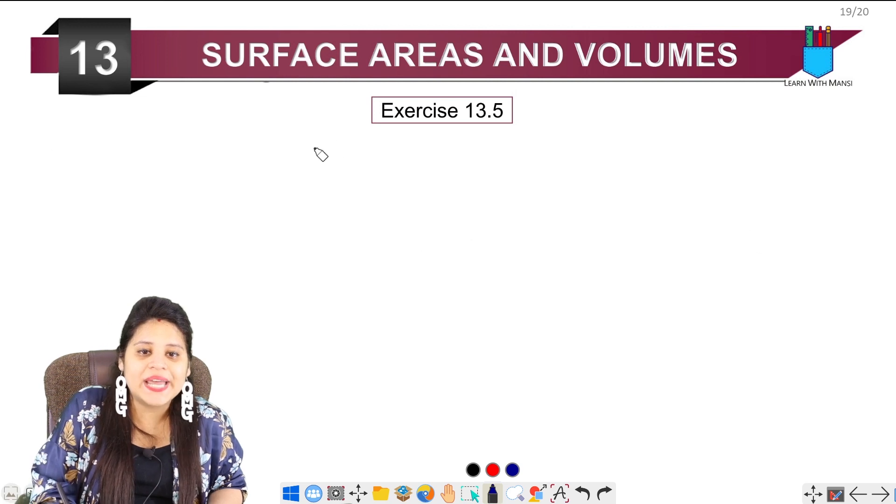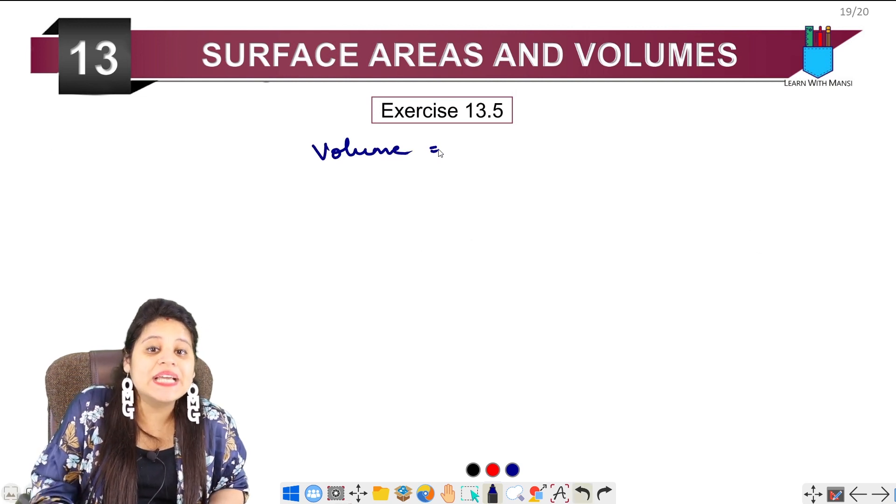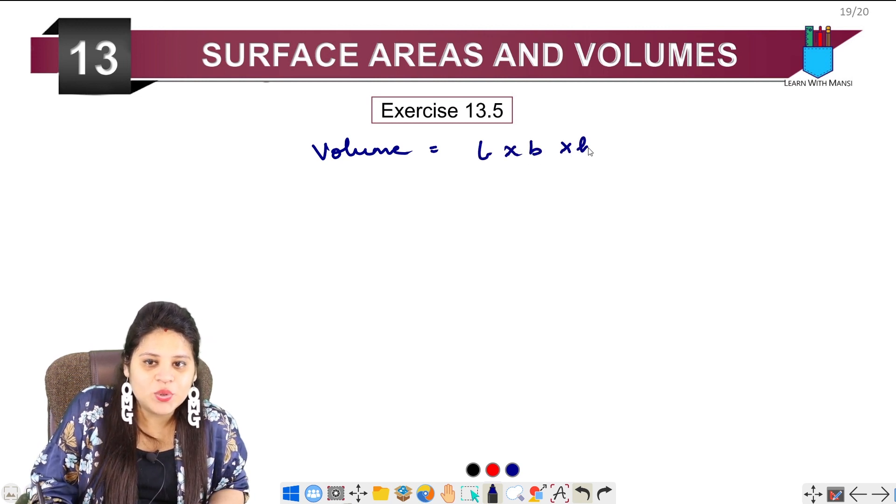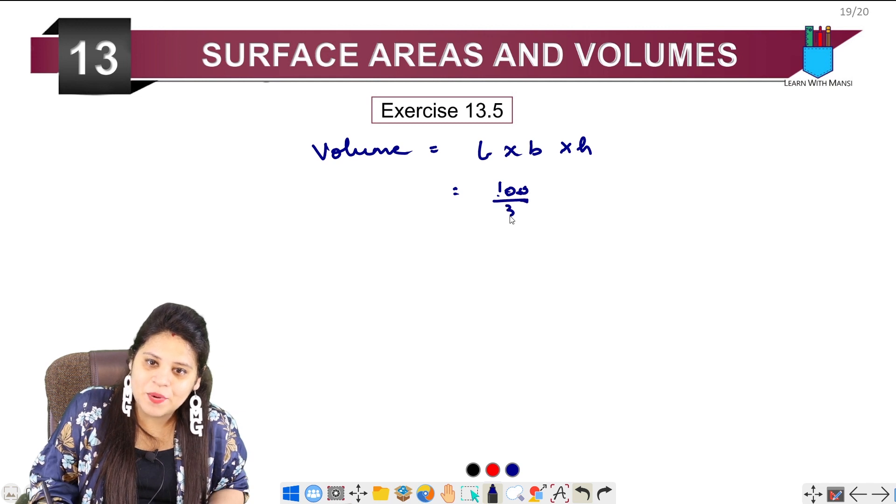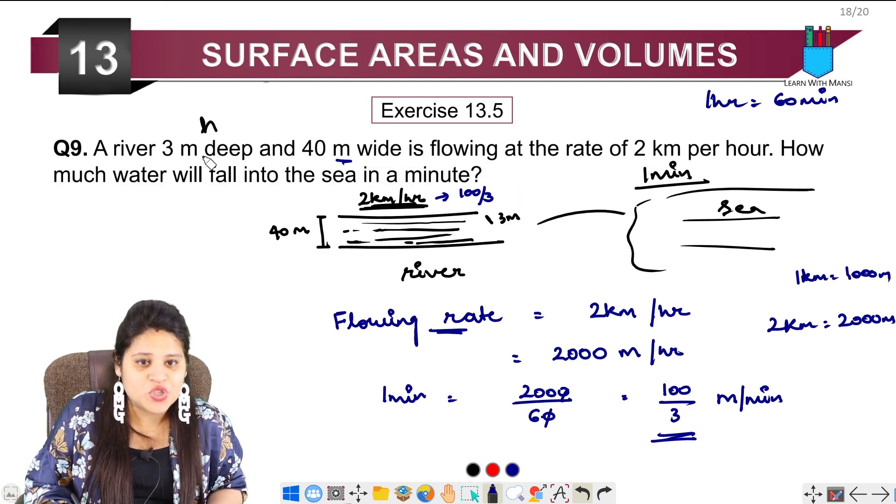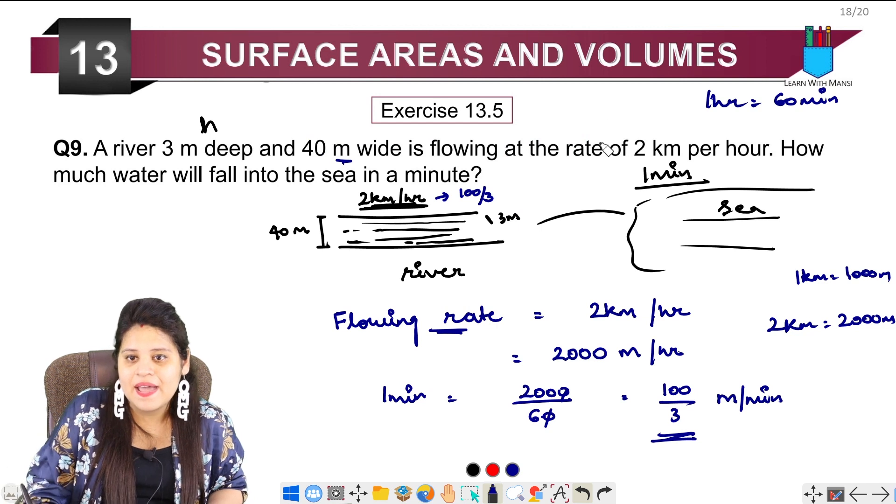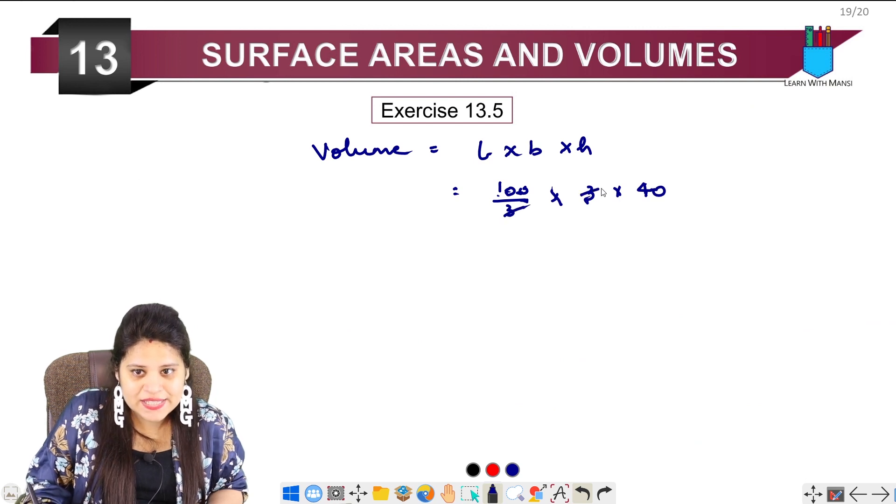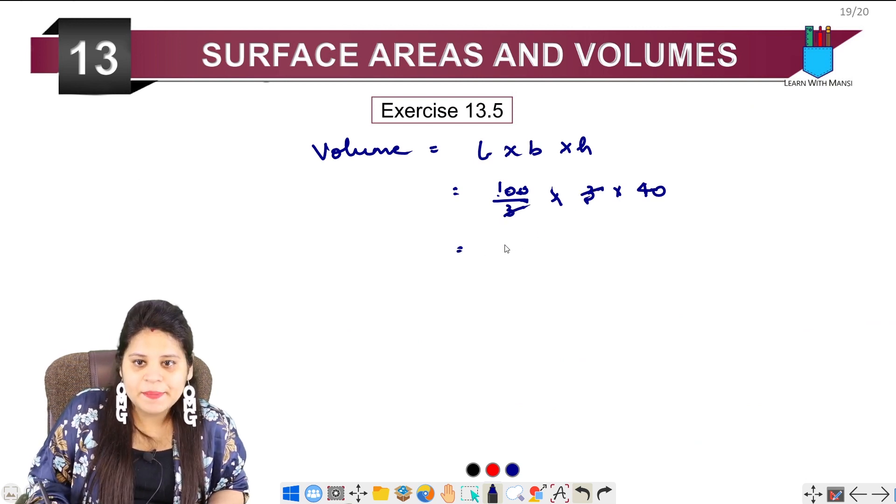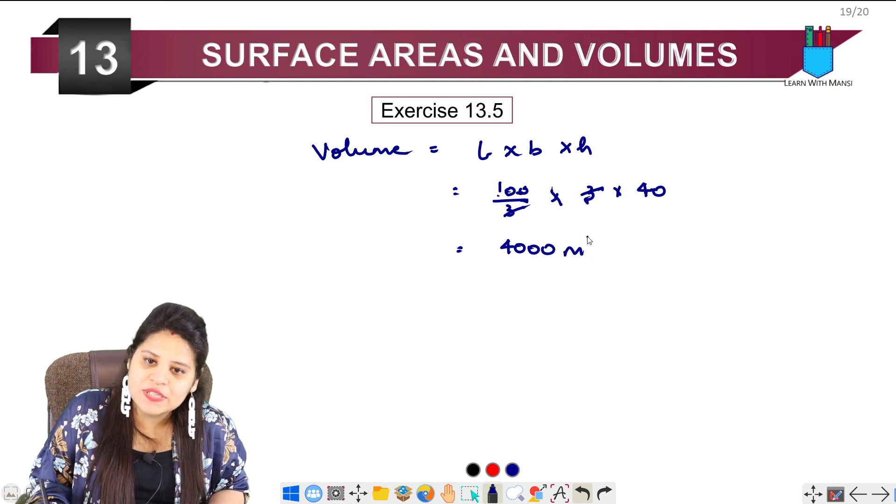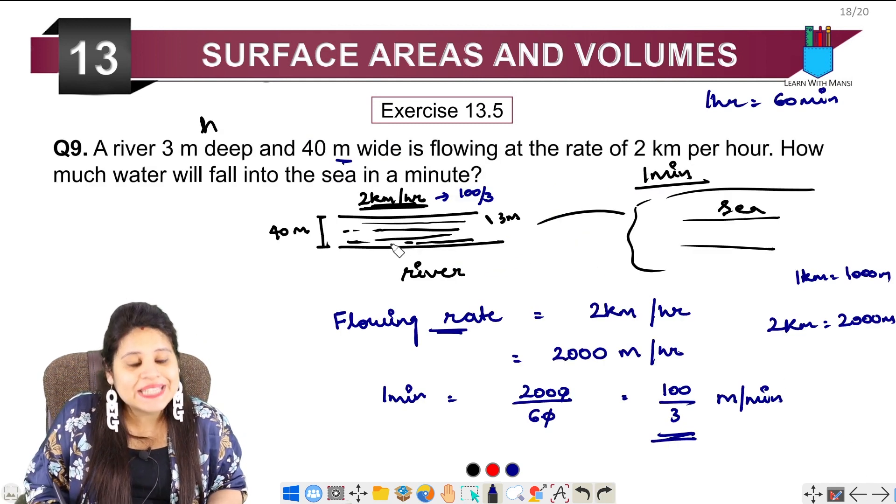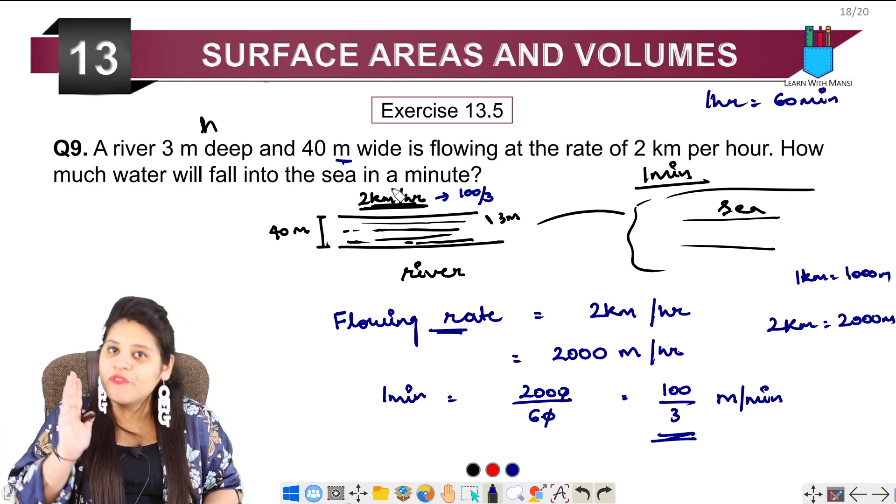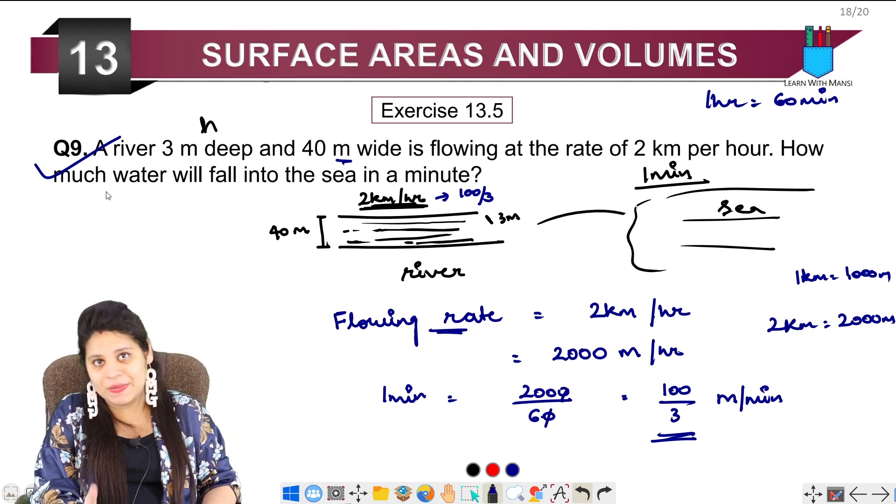Now this 100 upon 3 that I converted is our length. Now see how much volume will flow. Volume is what we're asked - how much water will flow into the sea in 1 minute. So this will be length into breadth into height. Length we just found is 100 upon 3, breadth from the question is 40, and width from the question is 3. So 3 cancels with 3, this gives us 100 times 40 which is 4000 cubic meters. So this much volume, meaning this much water will flow into the sea in 1 minute.